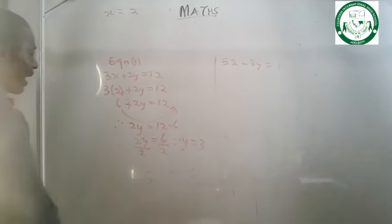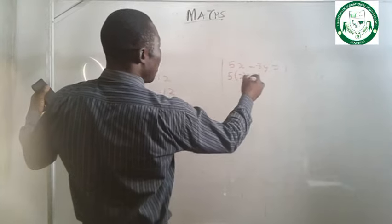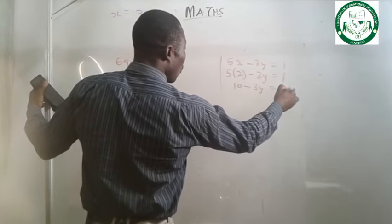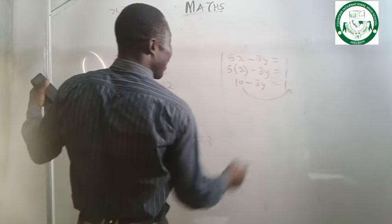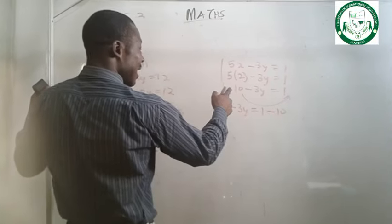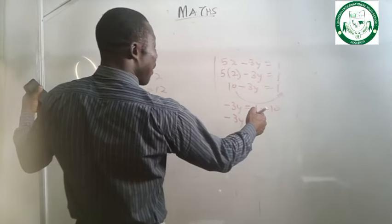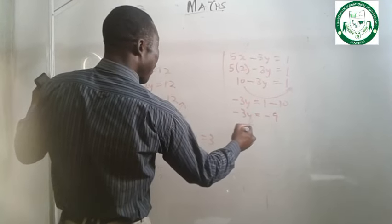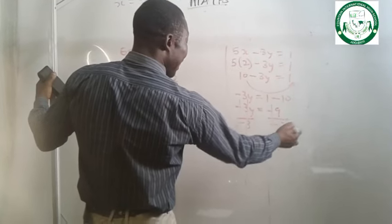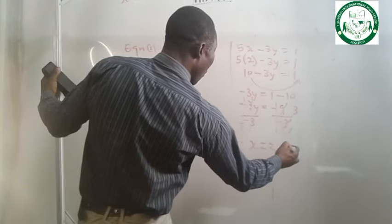Let's check using equation 2 with x equals to 2: 5 times 2 minus 3y equals to 1, giving 10 minus 3y equals to 1. Collecting like terms: minus 3y equals to 1 minus 10, so minus 3y equals to minus 9. Dividing by minus 3, y equals to 3. Therefore x equals to 2 and y equals to 3.